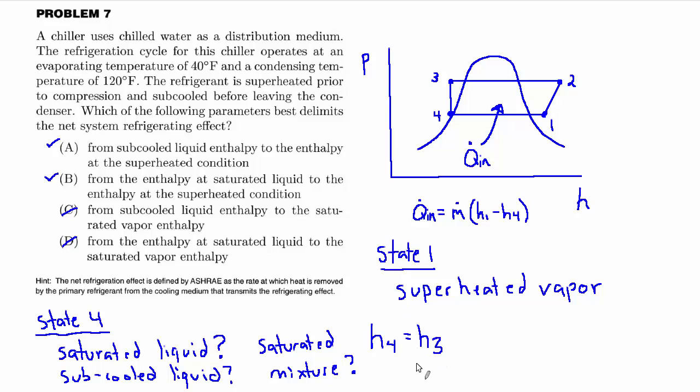And state 3, we know for a fact, and we've said it a couple of times now, but we'll say it again, we know for a fact state 3 is a subcooled liquid. So in choosing between A and B, we're going to choose A from subcooled liquid enthalpy, state 3, to the enthalpy at the superheated condition, state 1.